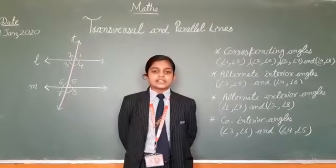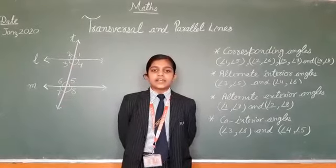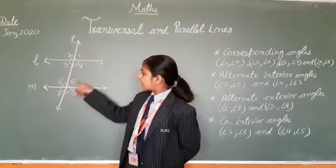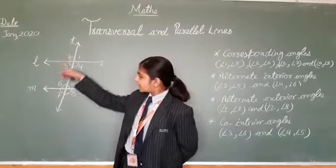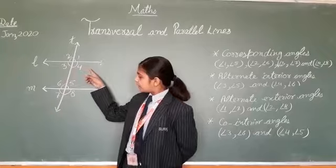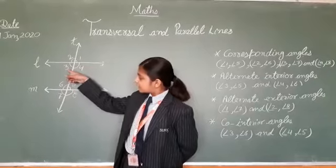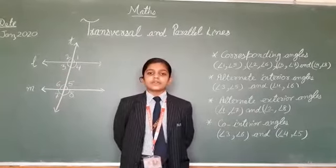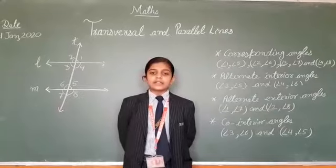then the forming angles are, first, corresponding angles: angle 1 and angle 5, angle 2 and angle 6, angle 4 and angle 8, and angle 3 and angle 7. Each pair of corresponding angles are equal.